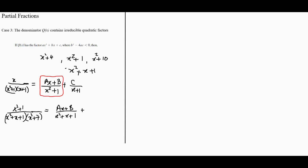Then you'd have Cx + D because the other is also irreducible, and you'll end up with x² + 7. So this is basically how we do the partial fractions.